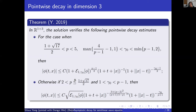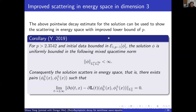For the scattering result in just the energy space, we can improve the lower bound for p to bigger than approximately 2.35. This is still probably not sharp, as it comes from solving a polynomial; the result can likely be improved for even smaller p.